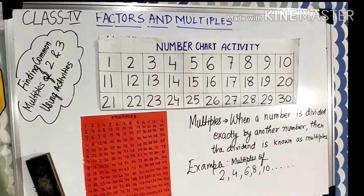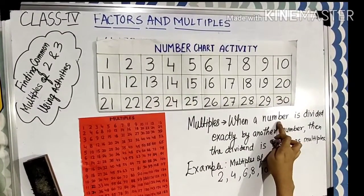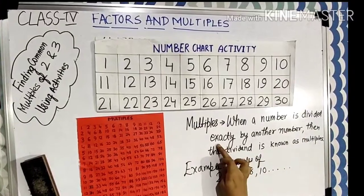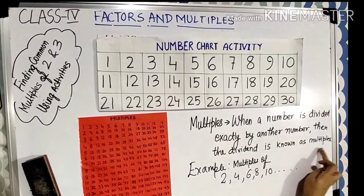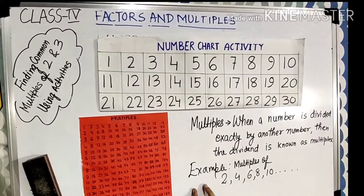Now what are multiples? When a number is divided exactly by another number, then the dividend is known as multiples. Let us see one example.